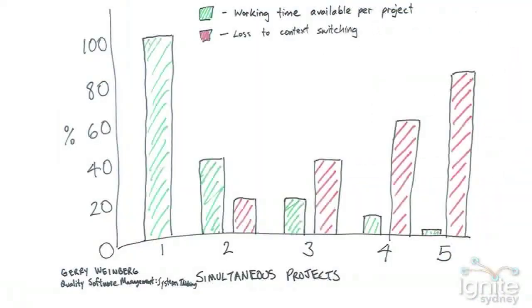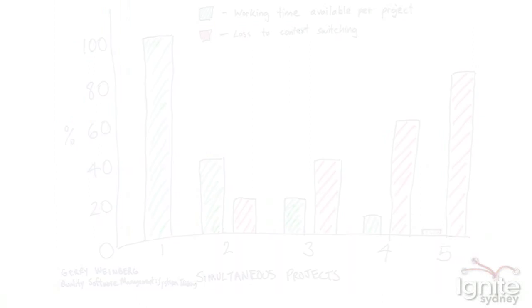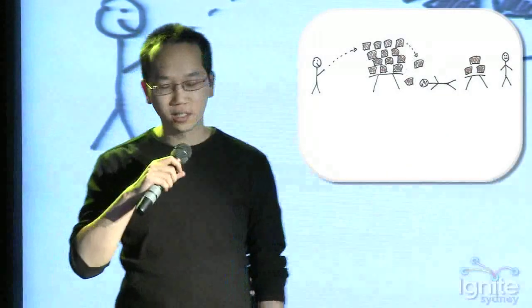And this doesn't, like I also included there the context switching cost. This is a more complicated graph, but what we're showing here is that the more projects you do at the same time, just the less time you actually have to spend on each project. Just because we're not like an actual computer, we don't switch at the same rate.